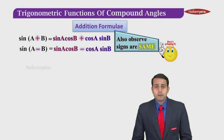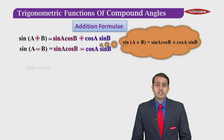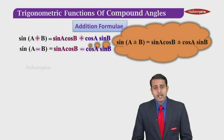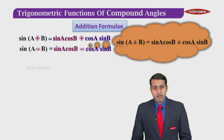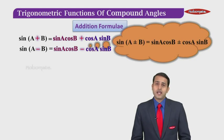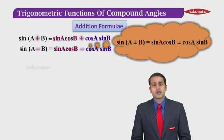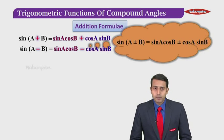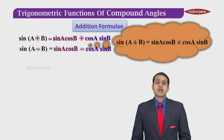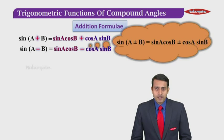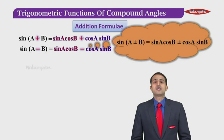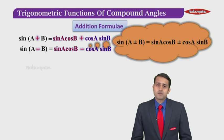If I have to summarize these two formulas, we can say sine of A plus-or-minus B is equal to sine A cos B plus-or-minus cos A sine B. So this is how we can remember the first two formulas.